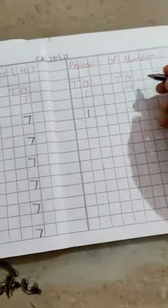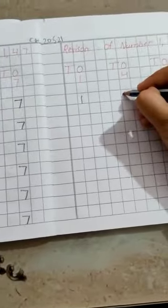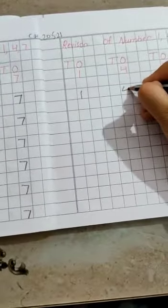Revision of number 1, 4 and 7. How to write number 1: standing line, 1. How to write number 4: slanting line, slipping line, standing line. How to write number 7: slipping line, slanting line, 7.